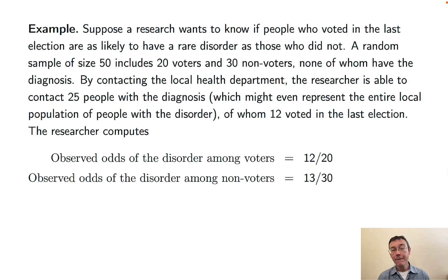Similarly, among non-voters, the observed odds are 13 over 30, 13 to 30, because we have 13 people that have the disorder among non-voters, and 30 people that do not have it among non-voters.